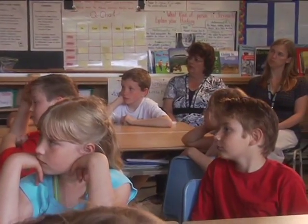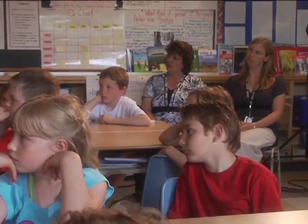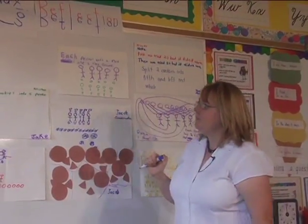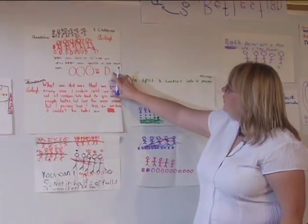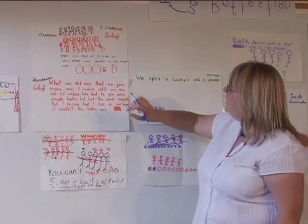This segment shows grade 3 students solving the problem: how can you share 12 cookies fairly with 5 children. When the teacher manages the discussion of student solutions, the students have a chance to talk about their mathematical thinking. The students started with a context they understood and used their prior knowledge and experience to solve the problem.